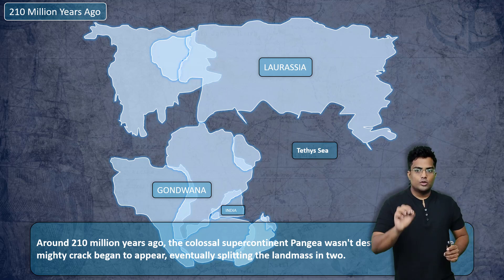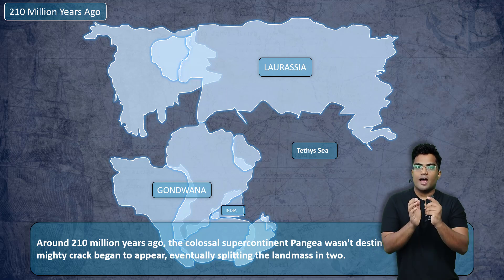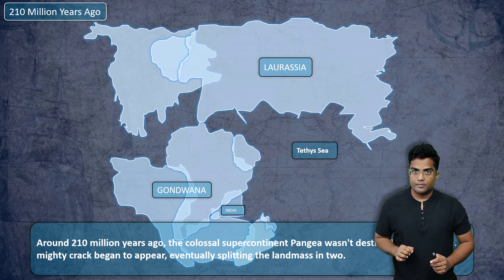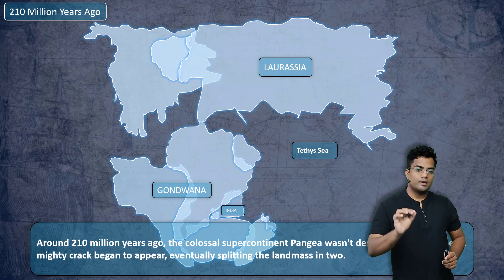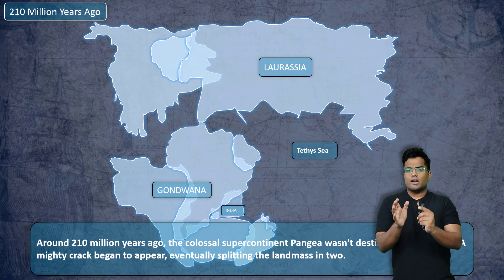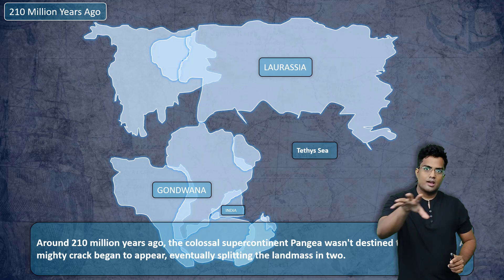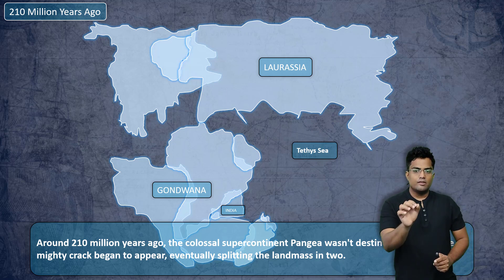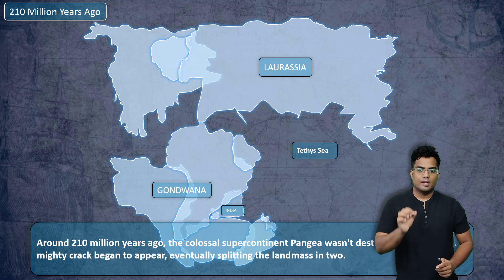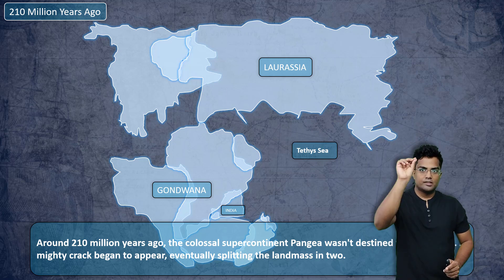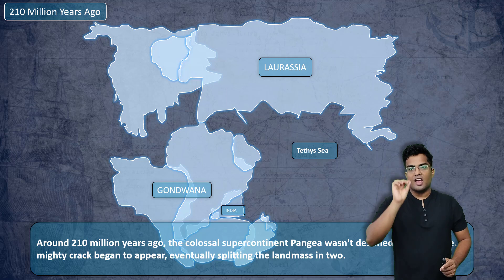Around 210 million years ago, the whole of Pangaea split into two parts. The northern part is known as Laurasia, and the southern part is known as Gondwana. Laurasia comprised North America and the whole of Eurasia, while Gondwana comprised South America, Africa, and India.